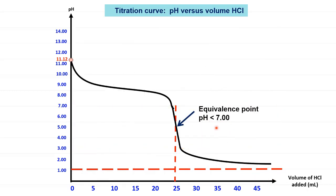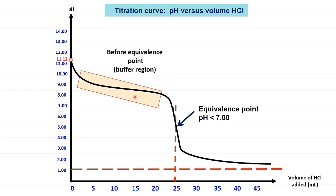Note that before the salt is formed at the equivalence point, the solution consists of both the weak base NH₃ and the strong acid HCl. These two components form a basic buffer region before the equivalence point.